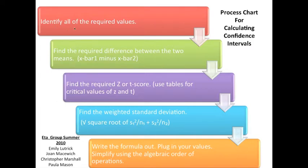Once you find the required values - in this problem they're talking about mu 1 and mu 2 and so forth - you have to find the difference of x-bar 1 minus x-bar 2. Once you've done that, you get your z or t-score.